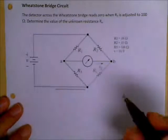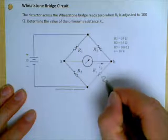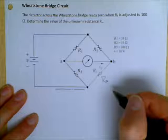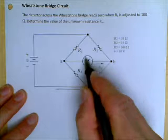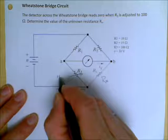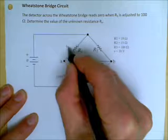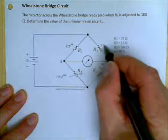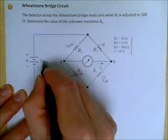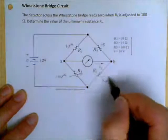Here we have a Wheatstone bridge before us and we have an unknown resistor Rx. We've placed it in the bridge, and in order to get the detector in the center to read zero, we've had to adjust R3 to a value of 100 ohms. The value of R1 is 10 ohms, R2 is 15 ohms, and the source voltage is 10 volts. The question is: what is the value of Rx?